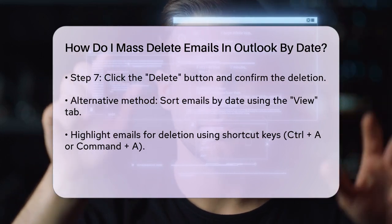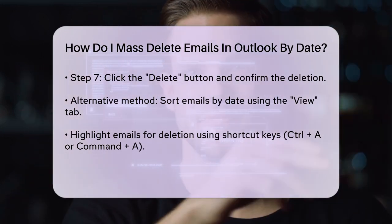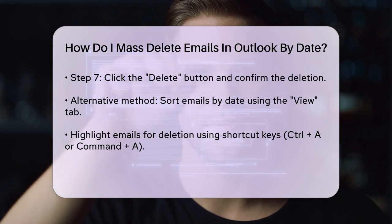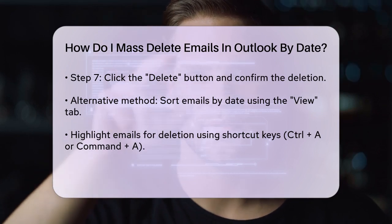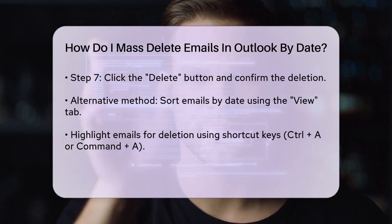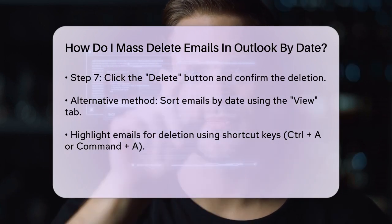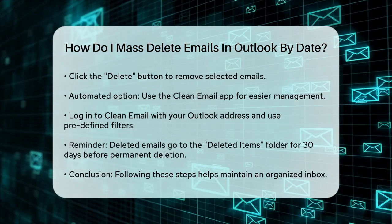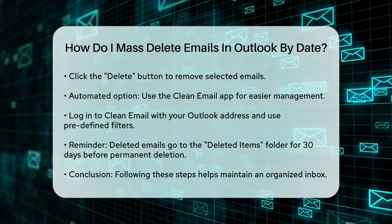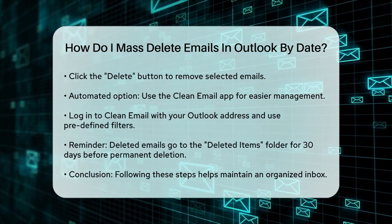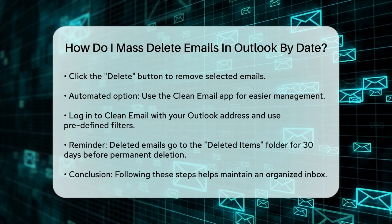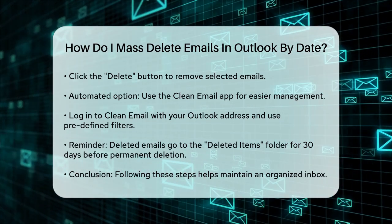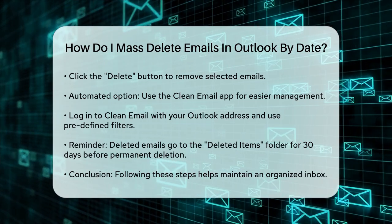Once selected, click the Delete button to remove them. If you prefer using a more automated approach, you can use the Clean Email app, which integrates with Outlook. In Clean Email, you can log in with your Outlook address and use the predefined filters to delete old emails. For example, you can click on the Old Mail option in the Favorites section, choose the age of the messages you want to delete, select all the messages, and then click Trash or Delete to remove them.